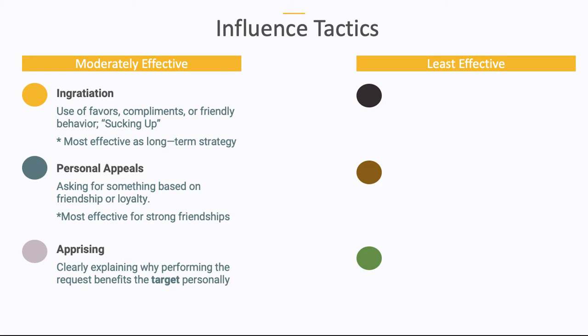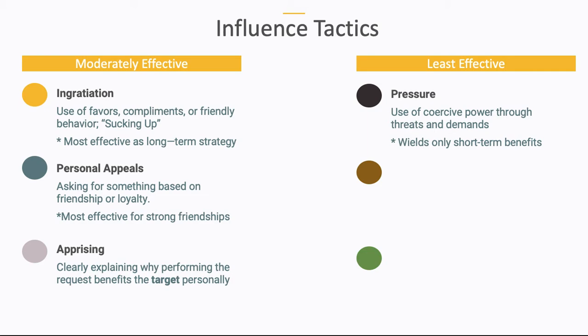In terms of least effective strategies, there are three. The first is pressure — this is when somebody tries to get someone else to do something through coercive power, through threats and demands. For example, if your boss says, 'I want you to work overtime this weekend, and if you don't, I'm going to fire you.' This might make some changes in the short term, but it certainly won't lead to long-term changes. If your boss repeatedly threatens to fire you for using your cell phone, that strategy loses its value over time.